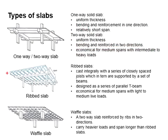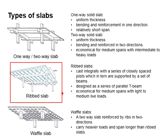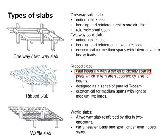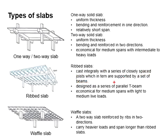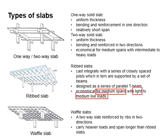Next, we look at the rib slab. The rib slab is cast integrally with a series of spaced joists, which are supported by a set of beams. It is normally designed as a series of parallel T-beams, and it is economical for medium span with light to medium live load.